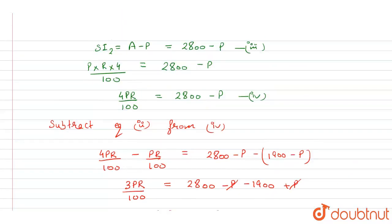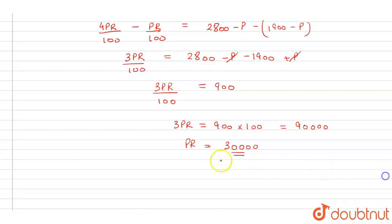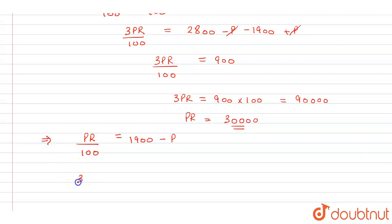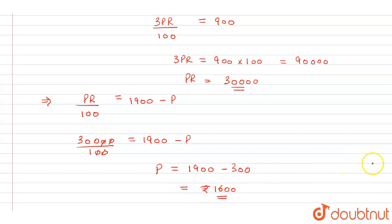Now we substitute the value of PR into our second equation: PR/100 = 1900 − P. Substituting PR = 30,000 gives 30,000/100 = 1900 − P, which is 300 = 1900 − P. Transferring P to the left and 300 to the right gives P = 1900 − 300 = 1600. So our principal amount is rupees 1600.